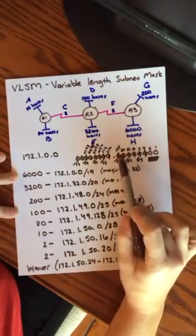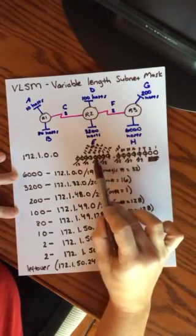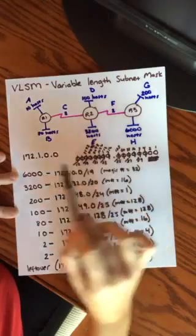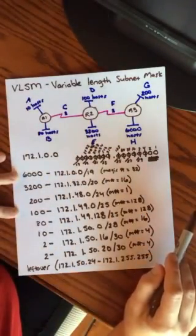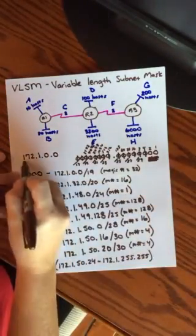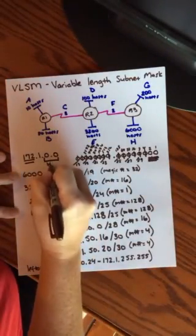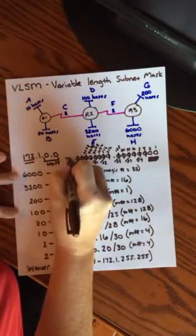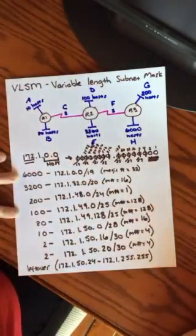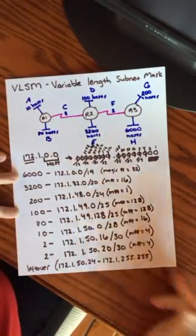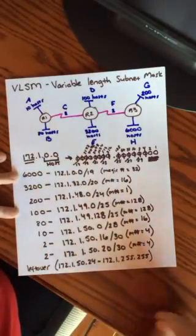So remember the value of your bits are always the same no matter what octet you're in. 1, 2, 4, 8, 16, 32, 64, 128. 1, 2, 4, 8, 16, 32, 64, 128. The values always stay the same. So when you're looking at a class B address, you have this is your host portion. And that's what we're looking at over here in binary, in order to determine what bits we need to borrow for our networks.